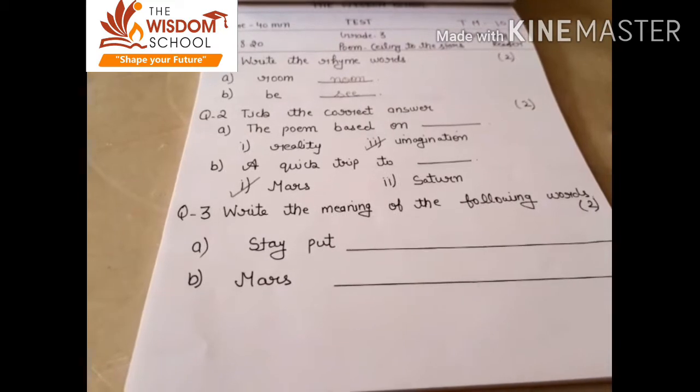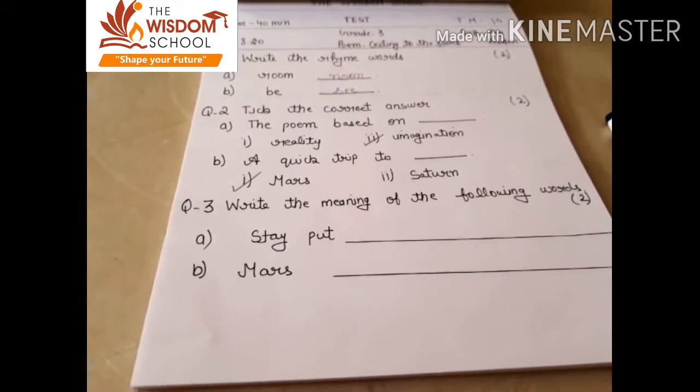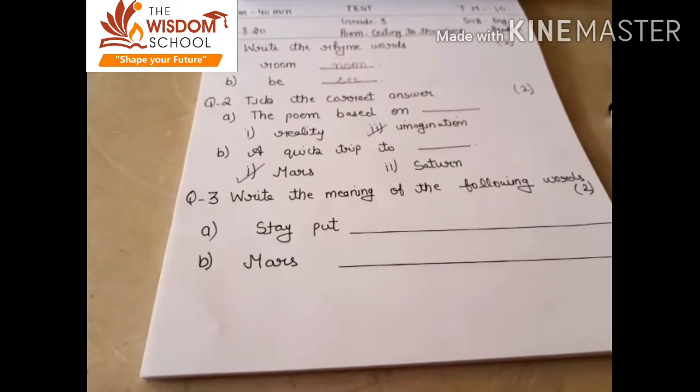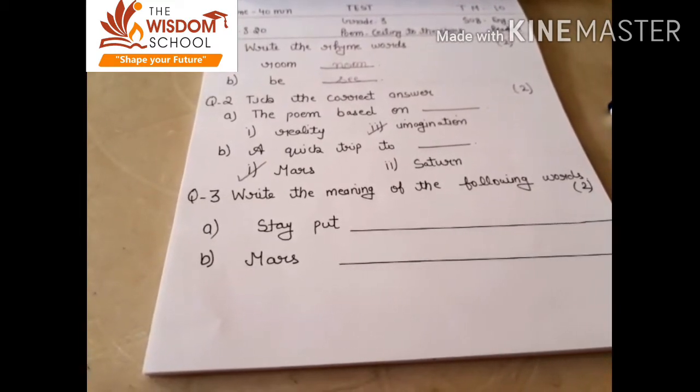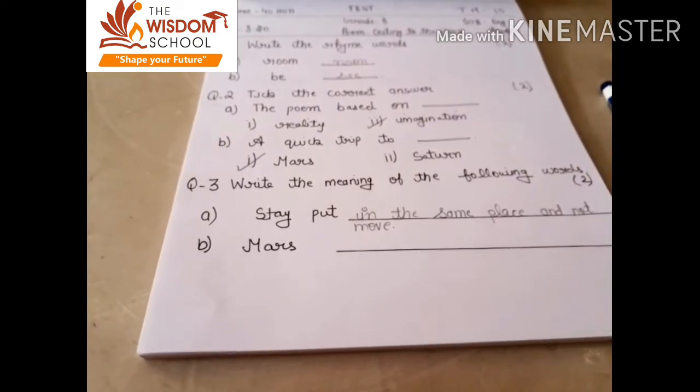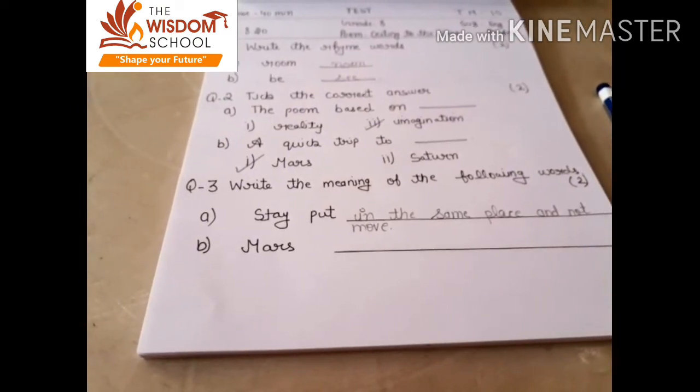Third question, write the meaning of the following words. Stay put means in the same place and not move. Mars means a planet in the solar system.